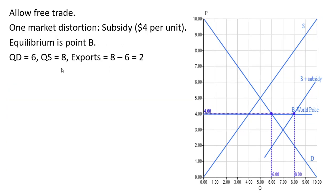Now let's look at what happens when we allow free trade. So here we're going to only have one market distortion, and that is going to be the subsidy, this $4 per unit subsidy. The equilibrium here now is going to be at point B, where the world price—we're allowing international trade, so the effective price in this market will be the world price of $4. And at $4, consumers will buy six units.